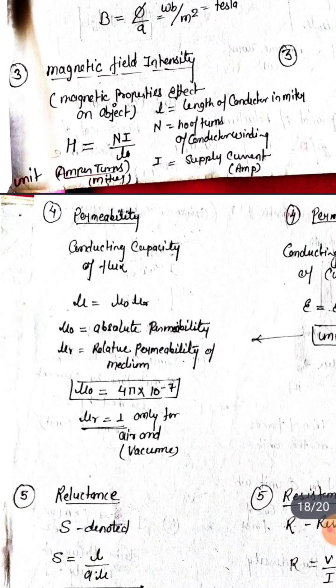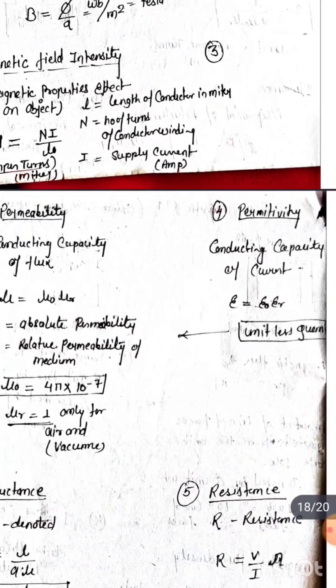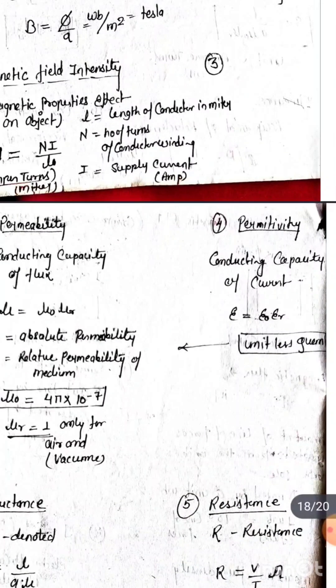Mu naught is always fixed at 4 pi times 10 to the power minus 7. Permittivity epsilon equals epsilon naught times epsilon r, where epsilon r is relative permittivity and epsilon naught is absolute permittivity.